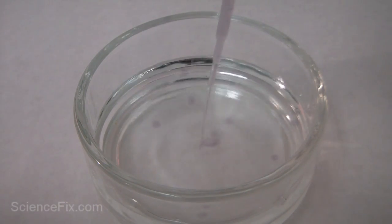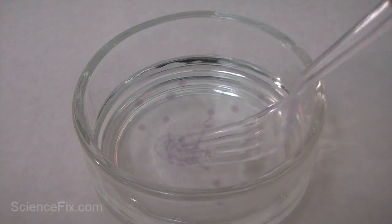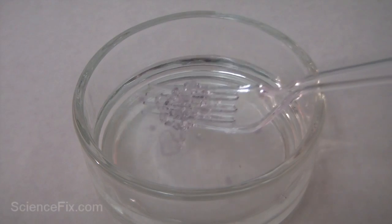Next, a larger amount of sodium alginate is squirted at once into the calcium chloride, and you can see it created almost like a worm-like structure.